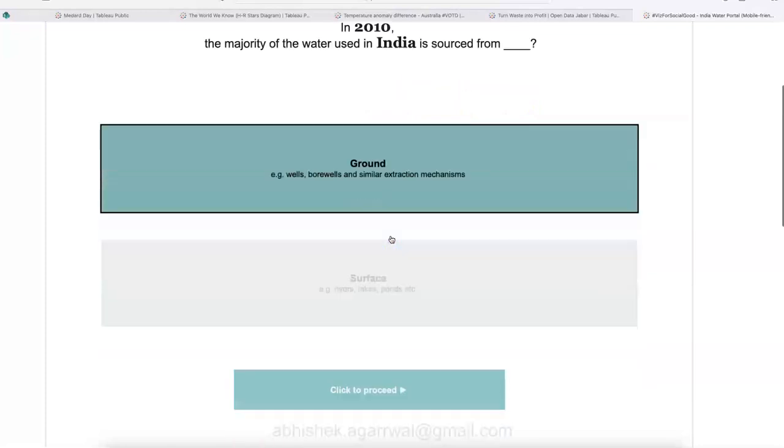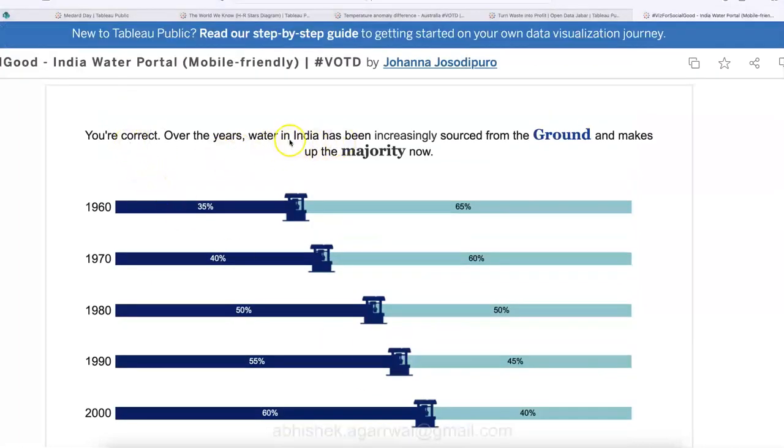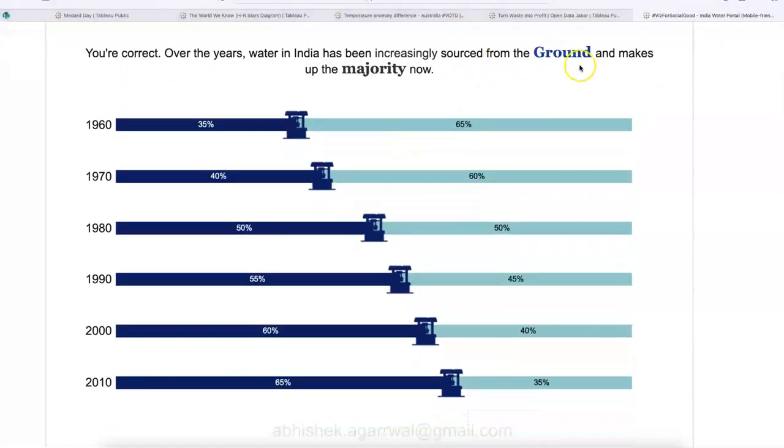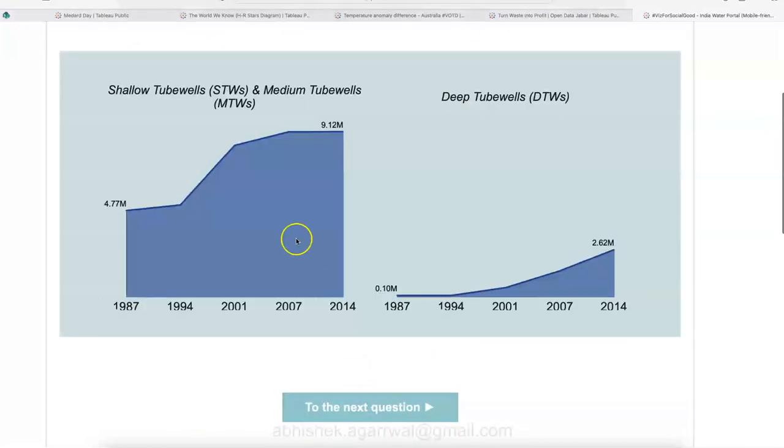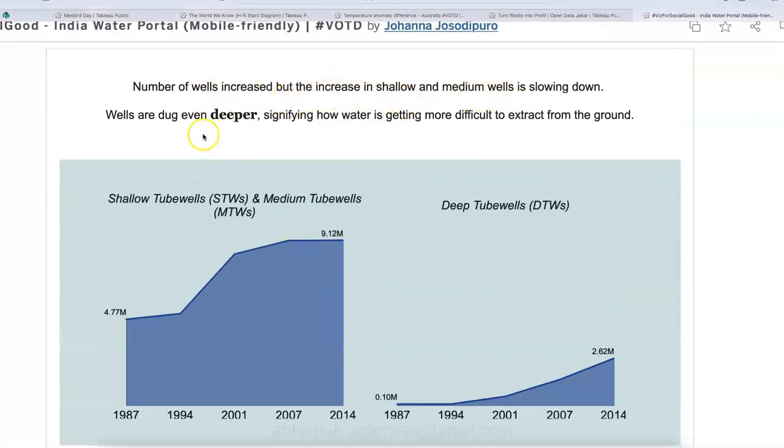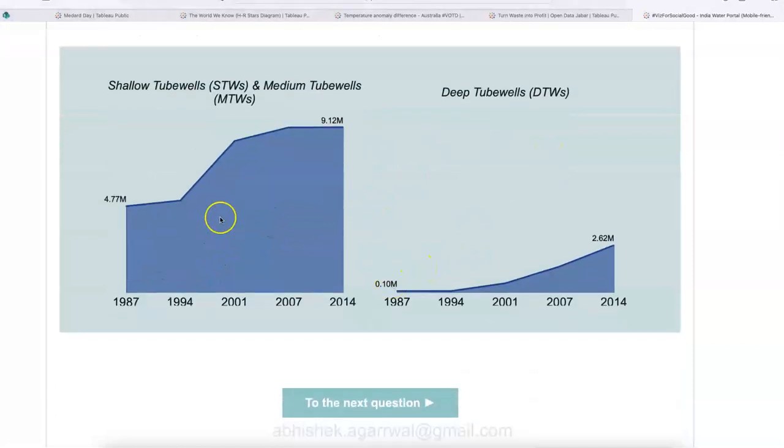So I'll click on ground. So click to proceed to see the result. You are correct. Over the years, water in India has been increasingly sourced from ground. And this is what 1960, 1970, 40%, 1980, 50%. And now in 2010, you have 65%. Is this alarming? Let's go and figure it out. So number of wells increased, but the increase in shallow and medium wells is slowing down. Wells are dug even deeper, signifying how water is getting more difficult to extract from ground. So yes, the situation is going concerning and this is how shallow tube wells and medium tube wells trend and the trend for the deep tube wells is increasing. If you see, you can move ahead.